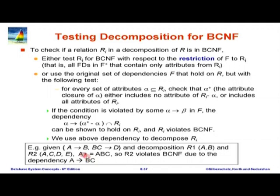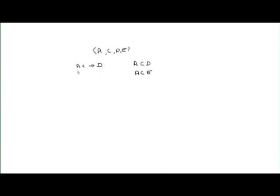This relation has a candidate key: course ID, section ID, semester, year. But there are functional dependencies that violate BCNF. In particular, course ID determines title, department name, and credits — and course ID is not a super key. So if there are two sections of the same course, all of these get repeated. We decompose using this dependency to get the course relation (course ID, title, department name, credits), and the remaining class1 (course ID, section ID, semester, year, building, room number, time slot ID, capacity).